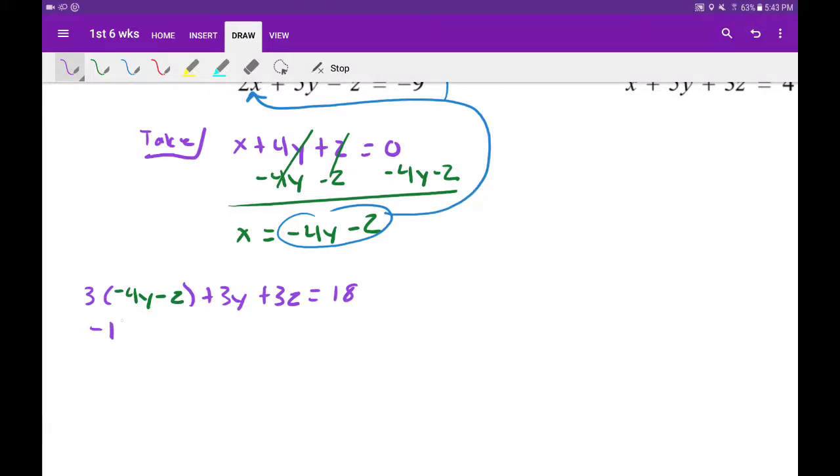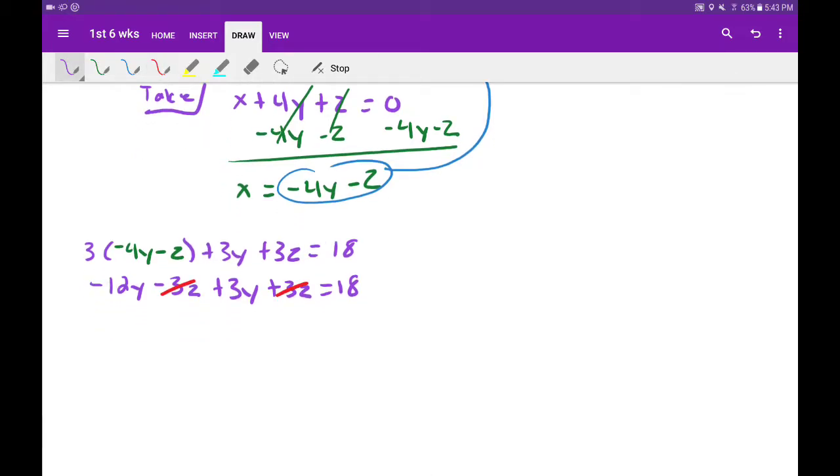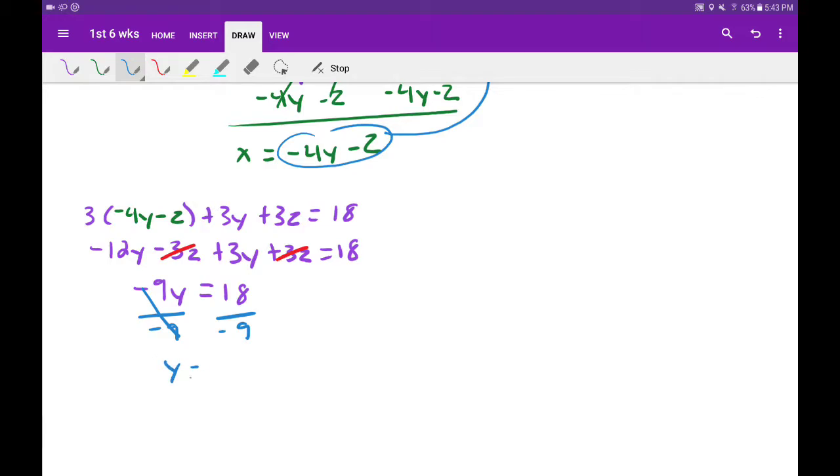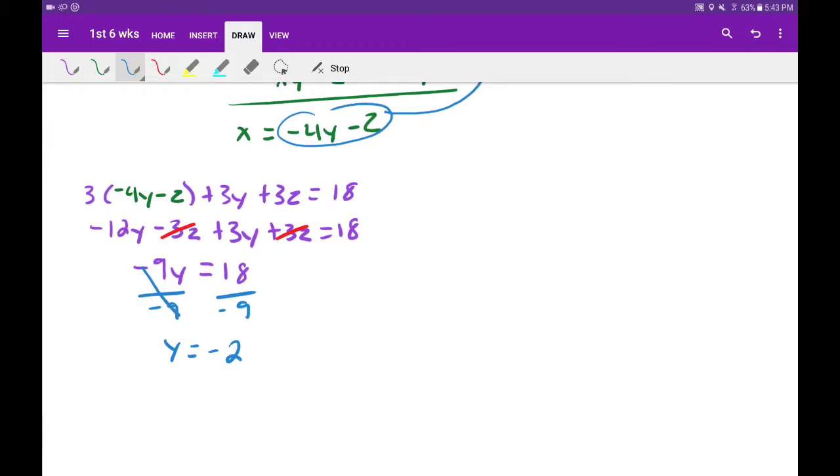Combine like terms here. So we get negative 12y minus 3z plus 3y plus 3z equals 18. I'm going to combine like terms. Negative 3z and plus 3z is going to cancel. Negative 12y and 3y make negative 9y equals 18. Then I'm going to divide negative 9 on both sides, which gives us negative 2. This is one of our new equations.